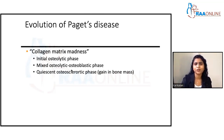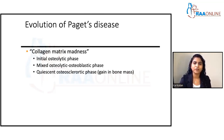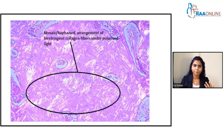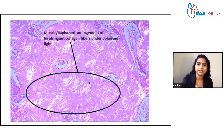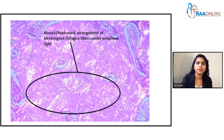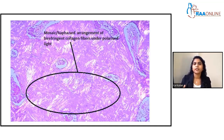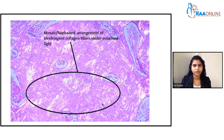Then the osteoblasts also become mad. The final stage is the osteosclerotic stage — osteoblasts win and there is a gain in total bone mass. But this thick bone is not strong, because the osteoblasts didn't bother laying trabeculae in a proper direction. The bone is formed in a haphazard arrangement — called the mosaic pattern — with collagen fibers running in different directions. These are clearly seen under polarized light.